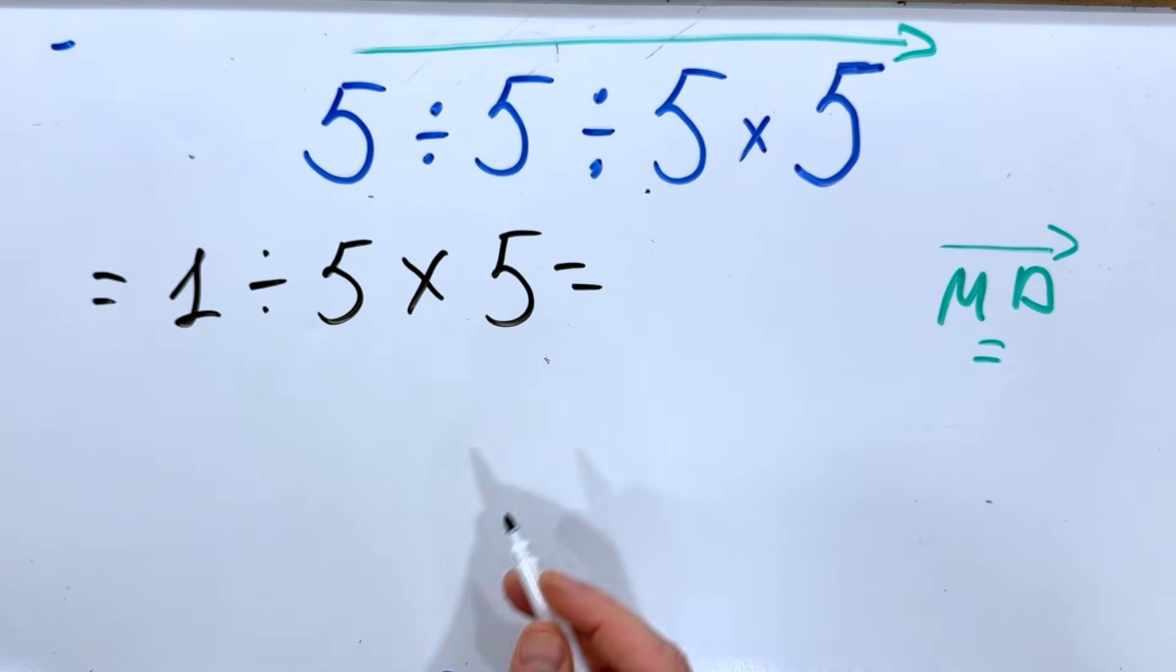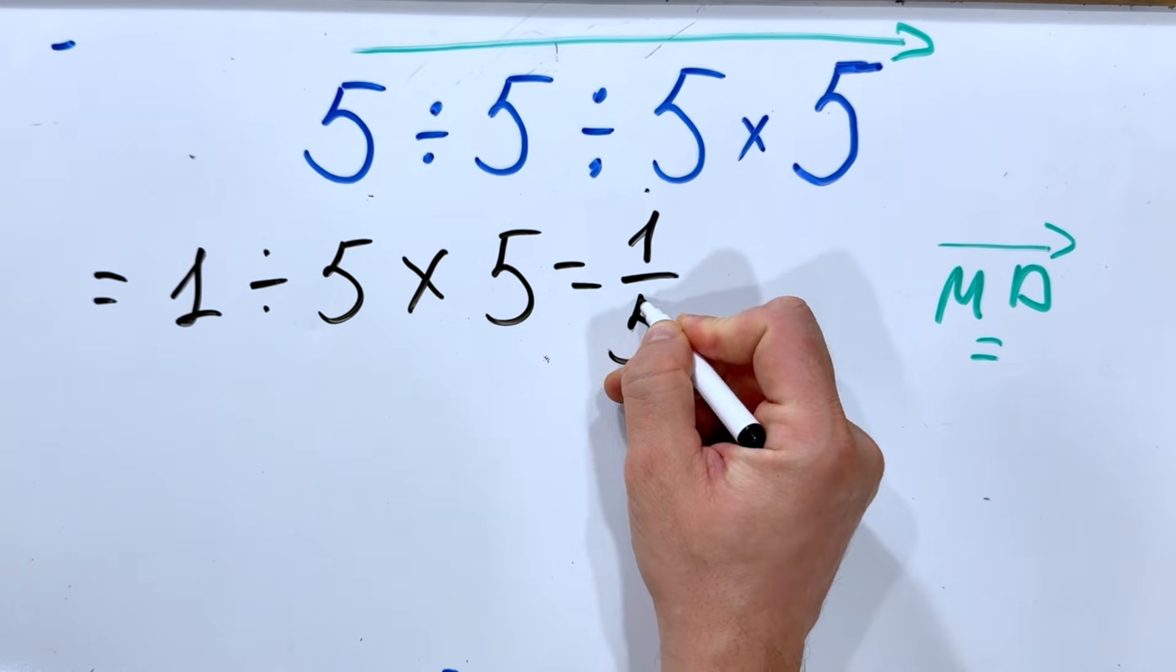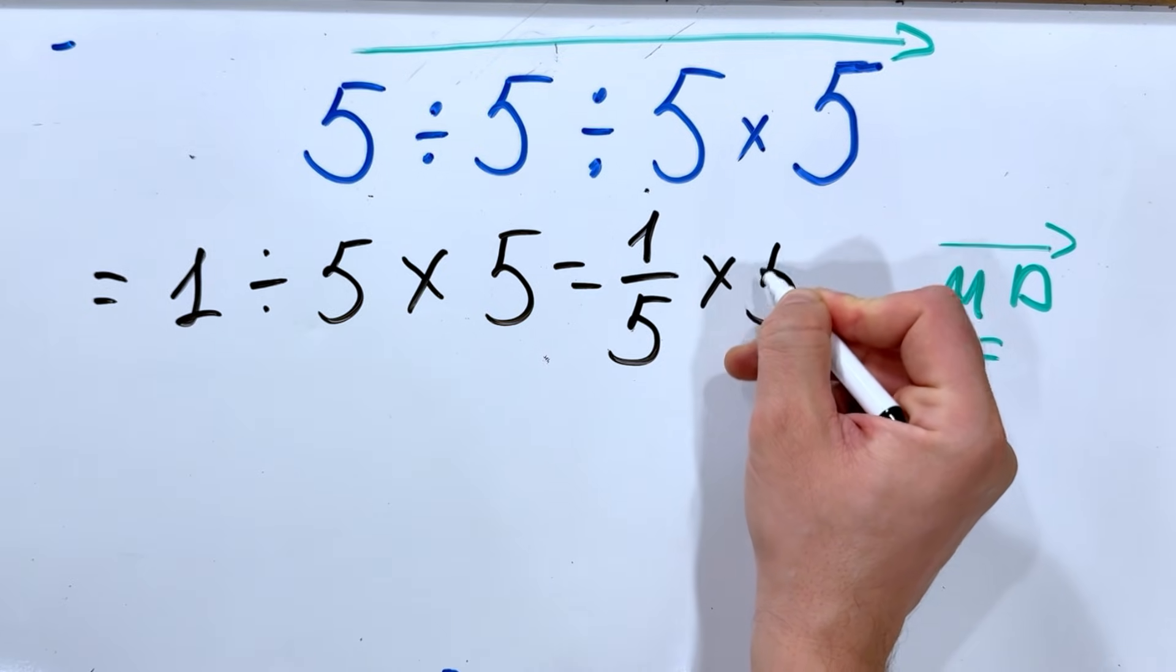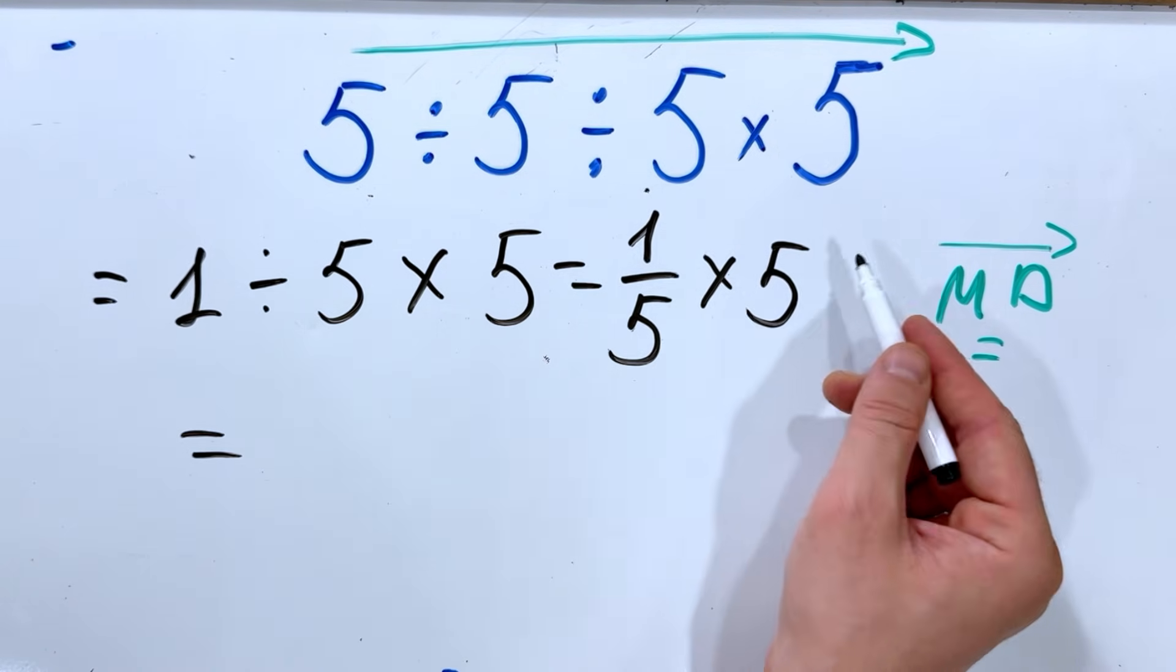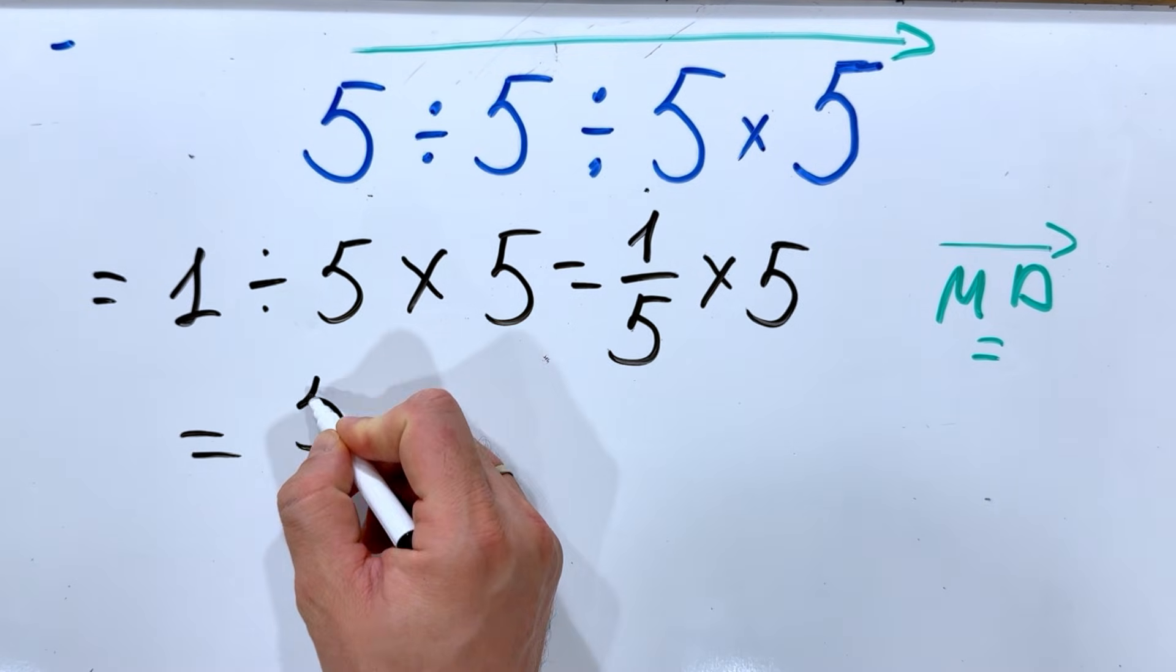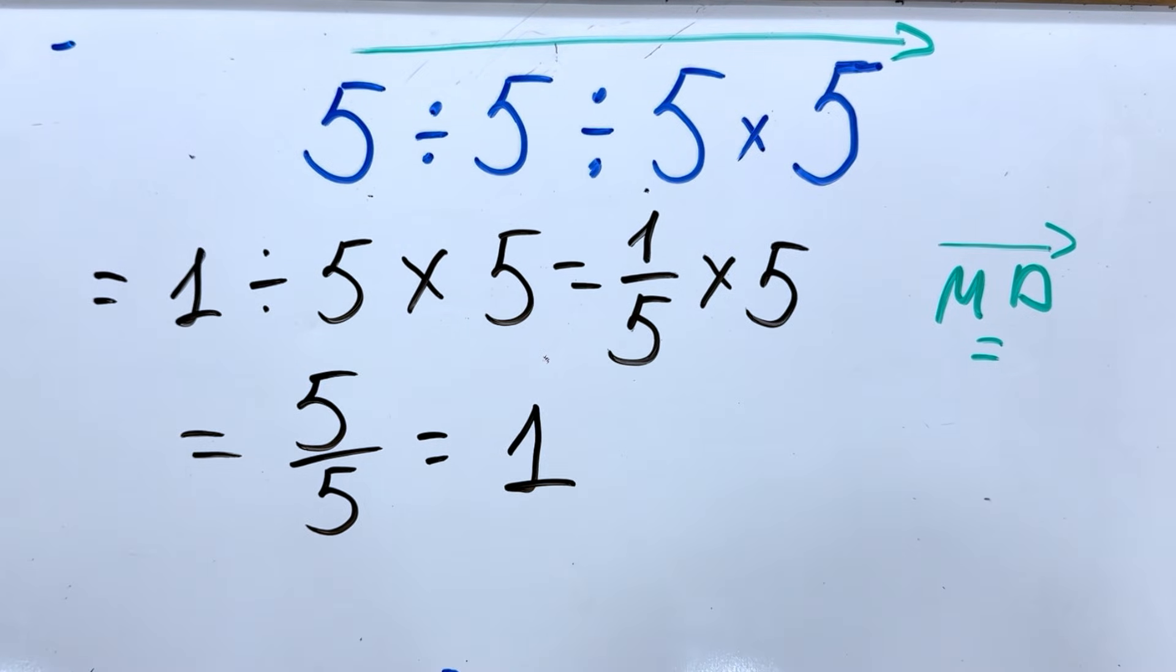Next, we have 1 divided by 5, so we have the fraction and multiply by 5. So 1 over 5 multiplied by 5 equals 5 over 5, which equals 1.